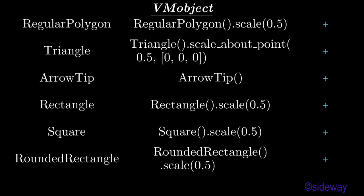Some other typical tipable beam objects are: regular polygon, triangle, arrow tip, rectangle, square, and rounded rectangle. Minimal object is a rear point.